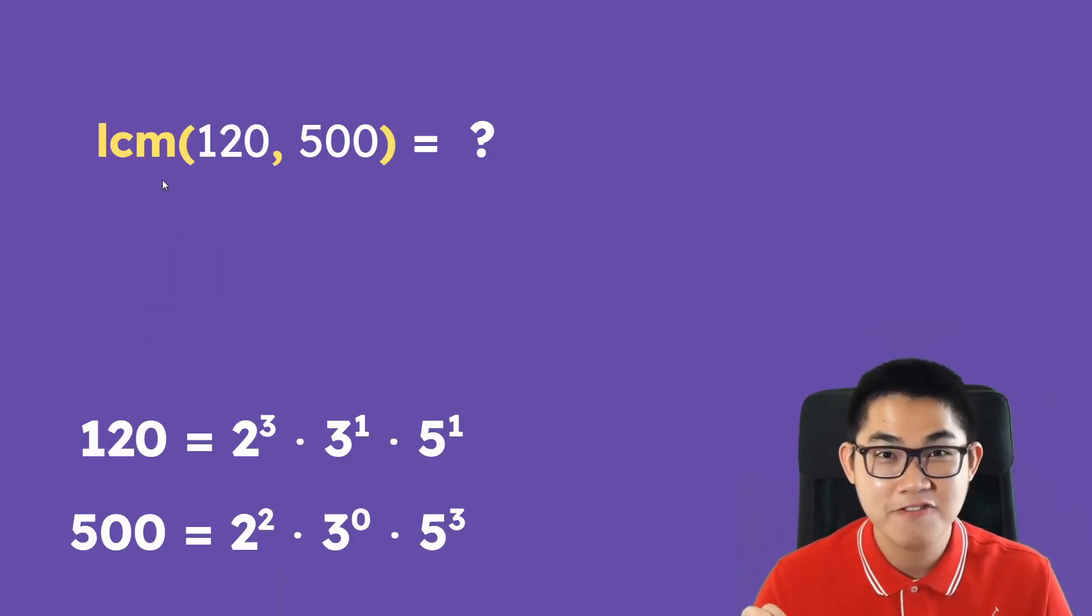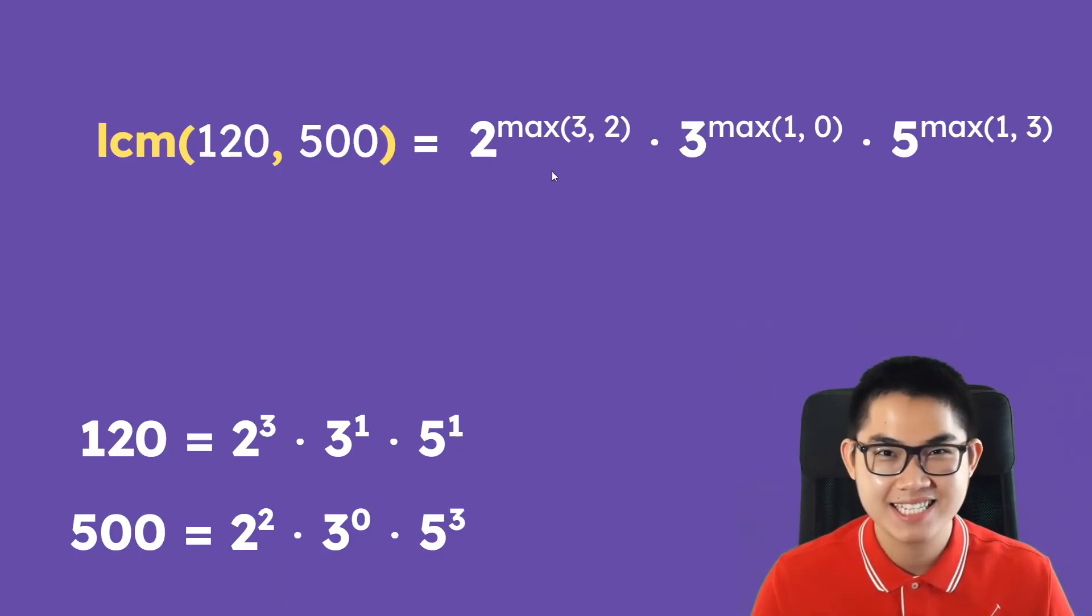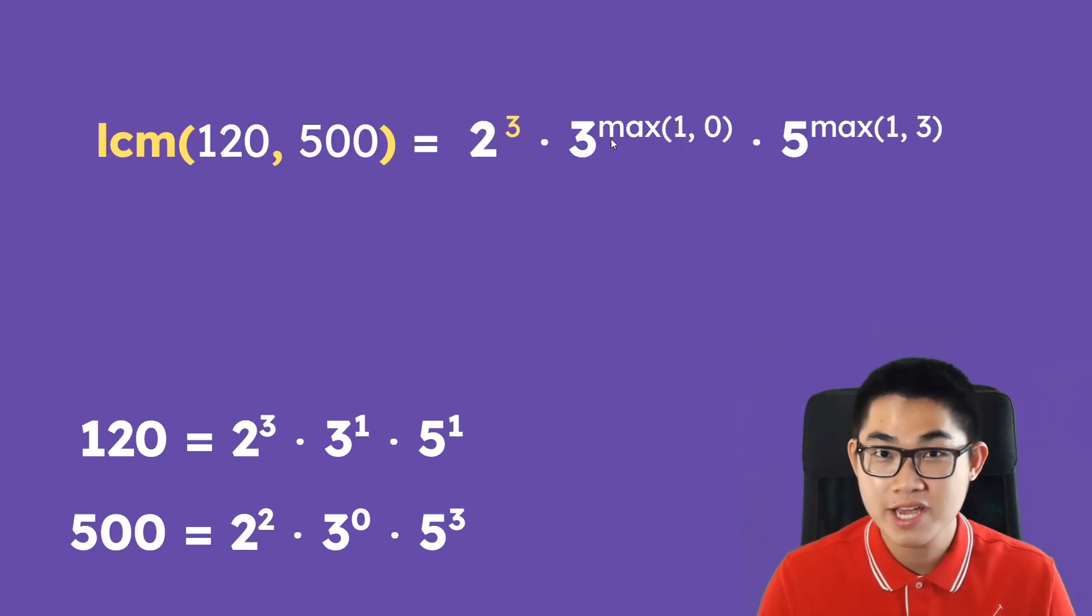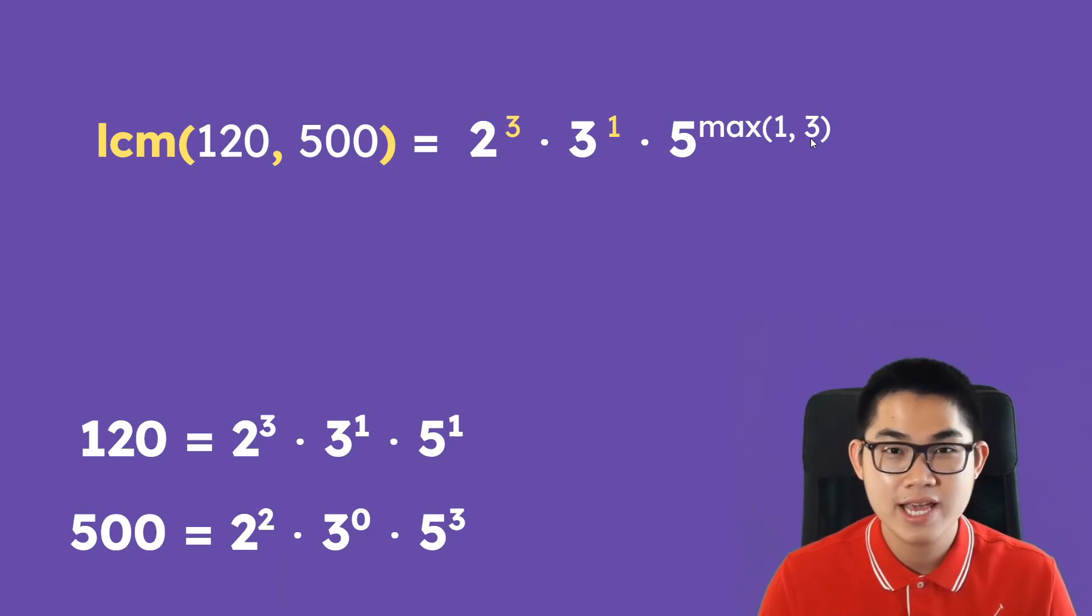Calculating the LCM is actually very similar. So instead of min just do max and that's all you have to do. And guess what, max will let you take the larger number out of the two. So 3 and 2 just take 3, max of 1 and 0 is a 1, max of 1 and 3 is a 3. 2 to the power of 3 is 8 and then times 3 times 125 is 3000.